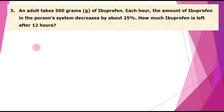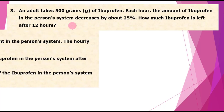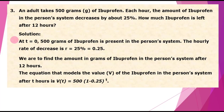Moving on to number 3. An adult takes 500 grams of ibuprofen. Each hour, the amount of ibuprofen in the person's system decreases by about 25%. How much ibuprofen is left after 12 hours? For the solution, at T equals 0 the initial amount of ibuprofen is 500 grams, present in the person's system. The hourly rate of decrease is 25%, or 0.25.